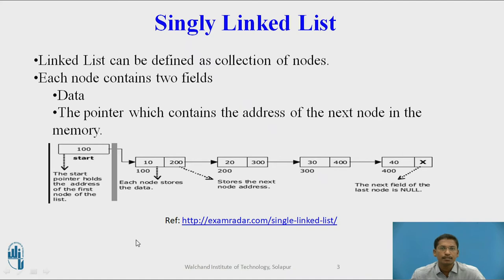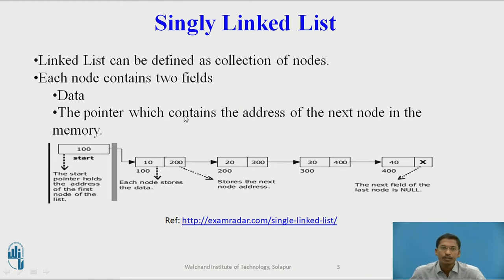Now this is a singly linked list. A linked list can be defined as a collection of nodes, and each node in a singly linked list consists of only two fields. First one is integer data, or we call it as key. Second one is a pointer which is pointing to a next node, or which holds the address of the next node. A first node here is 10, and start is a global pointer which is pointing to the first node. The last node's next pointer will always store null, indicating that this is the end of the singly linked list.